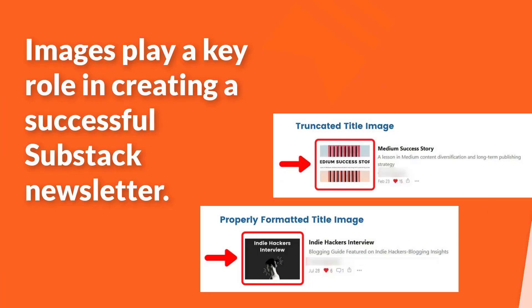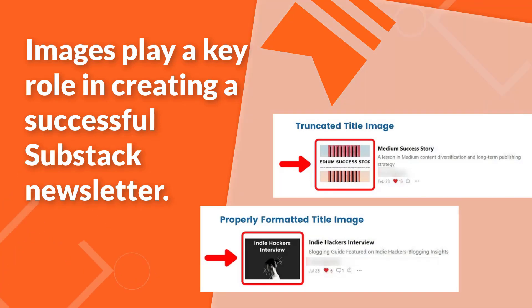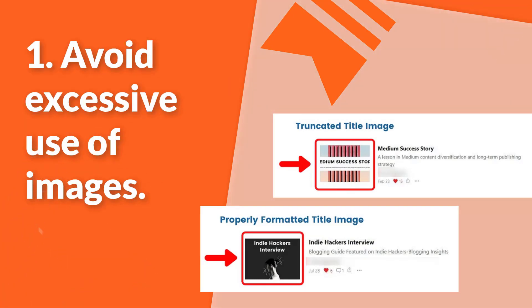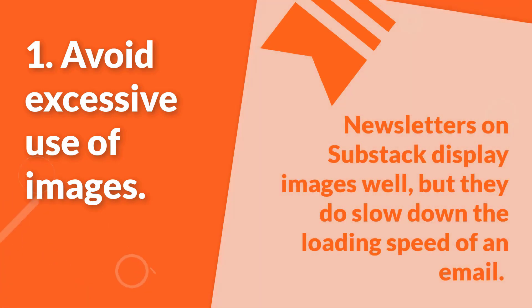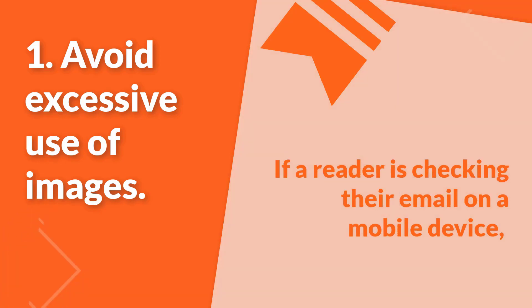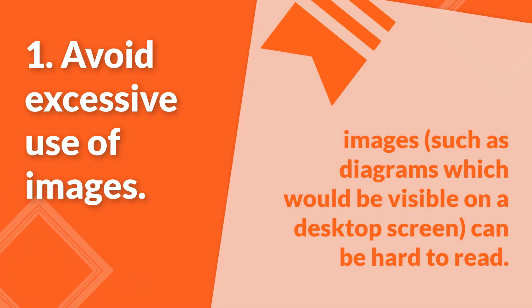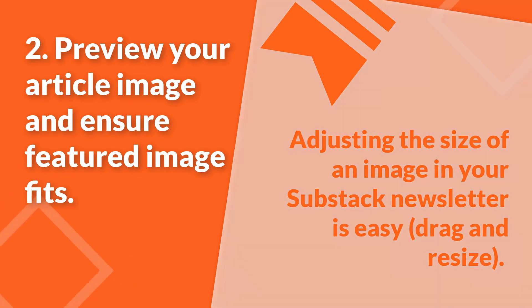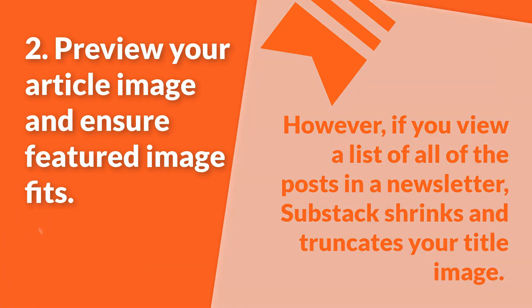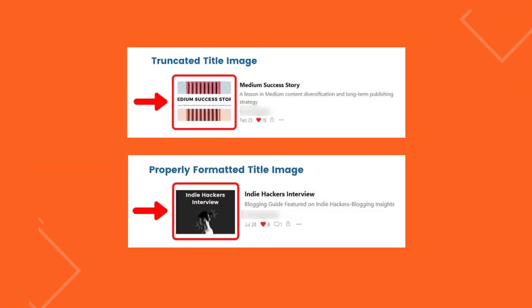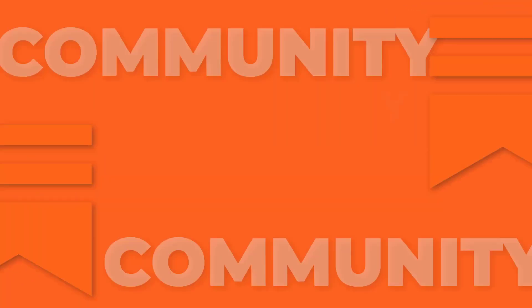Number 6: Images. Images play a key role in creating a successful Substack newsletter. First, avoid excessive use of images — newsletters on Substack display images well, but they do slow down the loading speed of an email. If a reader is checking their email on a mobile device, images such as diagrams, which would be visible on a desktop screen, can be hard to read. Second, preview your article image and ensure the featured image fits. Adjusting the size of an image in Substack is easy — drag and resize. However, if you view a list of all the posts in a newsletter, Substack shrinks and truncates your title image. For this reason, it is imperative that you preview your image before publishing.